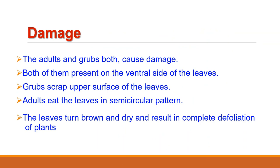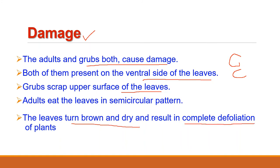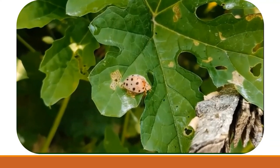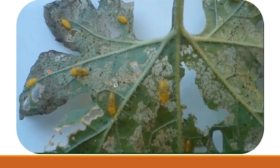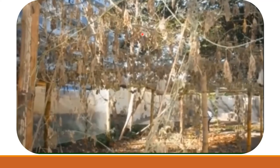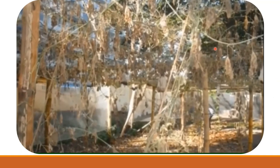Regarding damage, both adults and grubs are destructive stages and are present on the ventral side of the leaves. Adults feed on the leaves in a semicircular pattern in rows, whereas grubs nibble and scrape the upper surface of the leaves. This skeletonizes the leaves, giving a characteristic lace-like appearance. The infested leaves then dry up and fall off, sometimes resulting in complete defoliation of the plant. In this video, you can see the adult damaging the leaves, grubs nibbling and scraping the upper surface, and the resulting skeletonized lace-like leaves drying up, spoiling the whole crop.